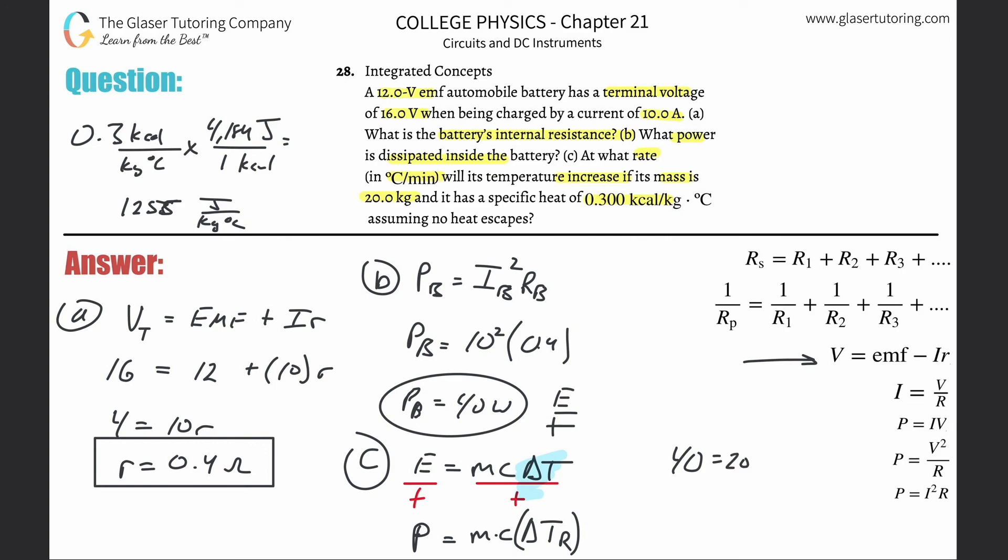The temperature rate is 40 divided by 20 times 1255. We get a value of about 0.00159. Remember that's in degrees Celsius per second, but they want per minute.